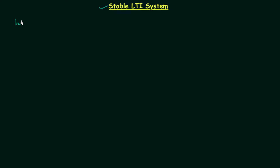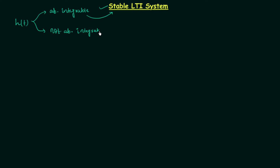If the impulse response of an LTI system, h(t), is absolutely integrable, then the LTI system is known as a stable LTI system. If the impulse response is not absolutely integrable, then the LTI system is known as an unstable LTI system. This means the integration from minus infinity to infinity of |h(t)| dt should be less than infinity.